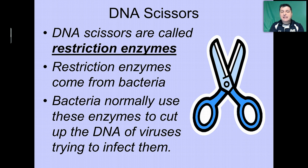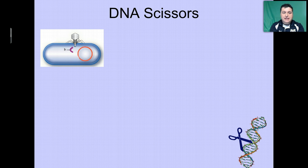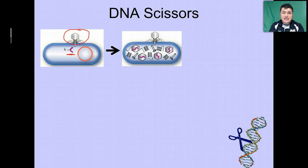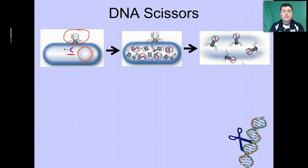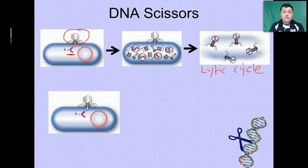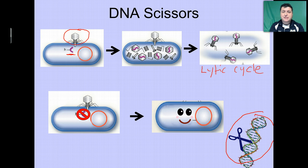Bacteria have these restriction enzymes because they need to protect themselves from invading viruses, whose goal is to inject DNA and force the bacteria into producing new viruses. When those viruses come out of the bacteria, they destroy and kill it — this is called the lytic cycle of viral reproduction. If the bacteria contains a restriction enzyme that's able to cut up DNA, the viral DNA will be destroyed and the bacteria will survive.